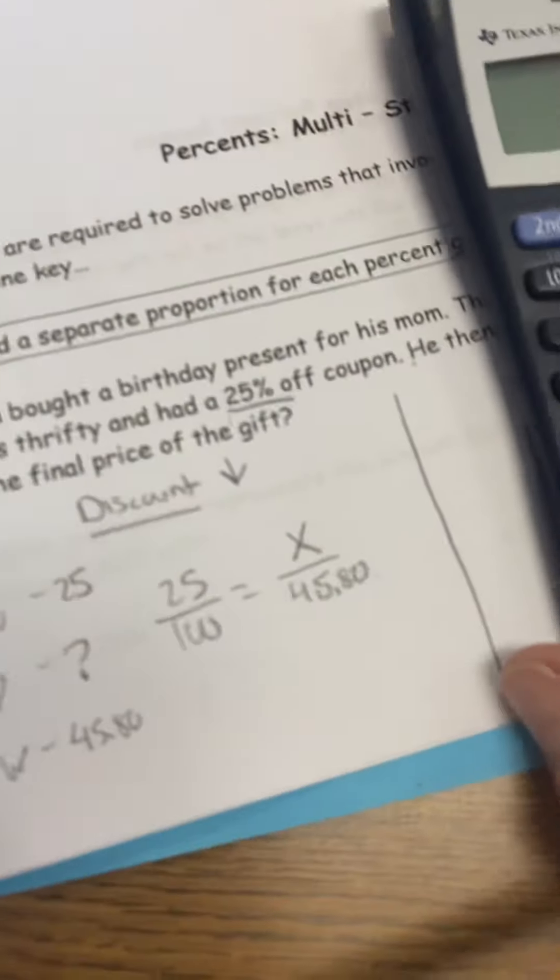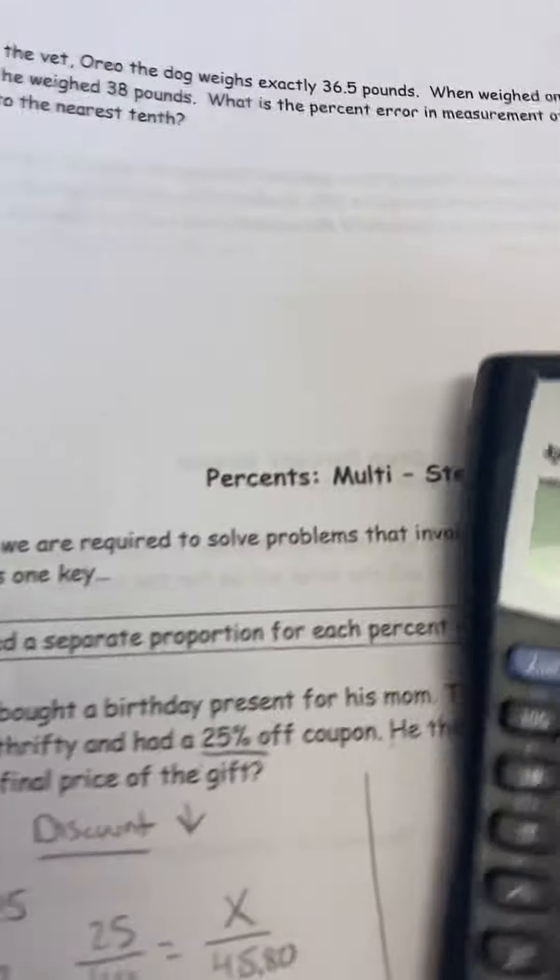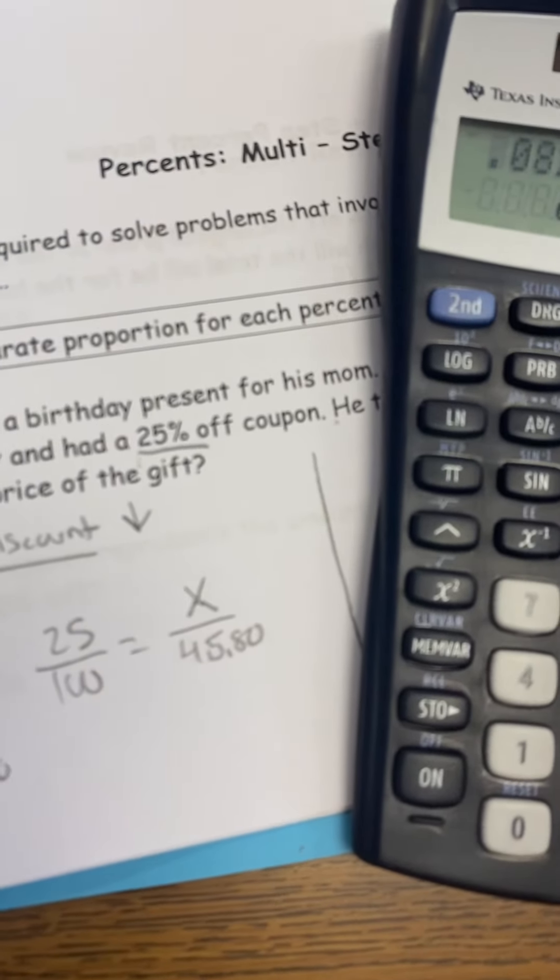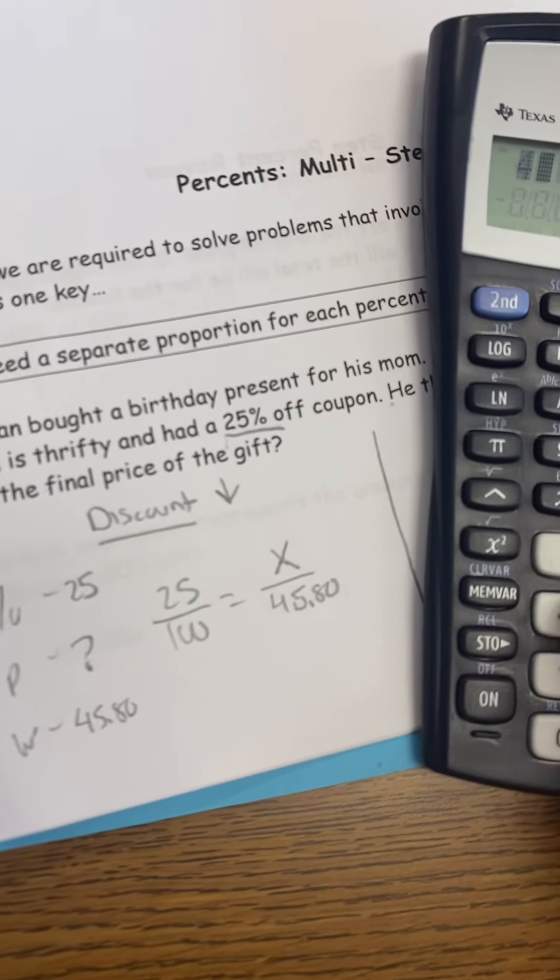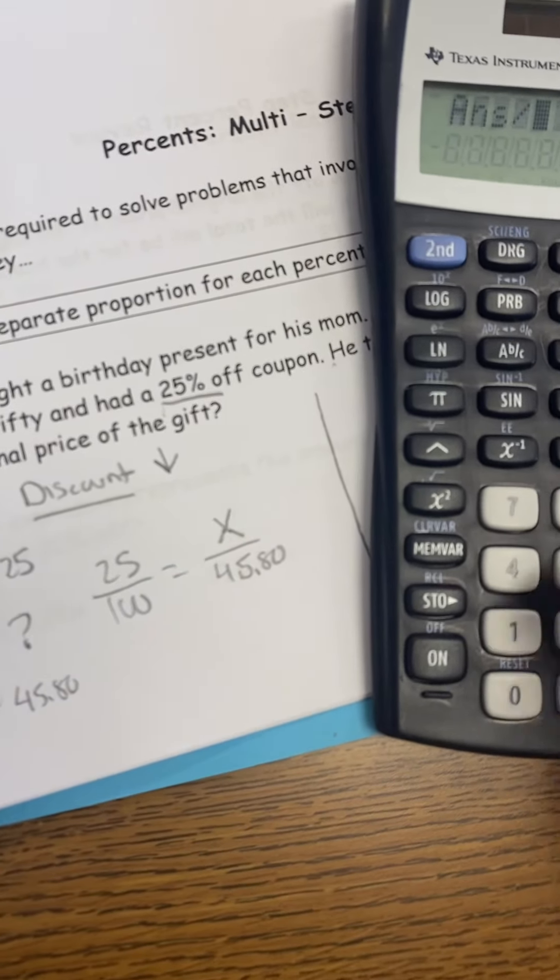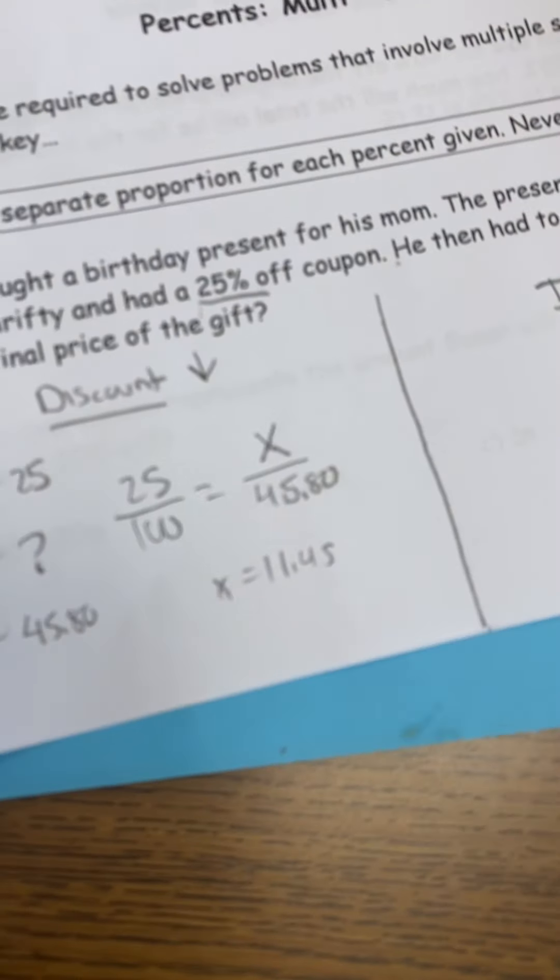So we're going to do, ready? 25 times 45.8 divided by 100. 45.8 times 25 divided by 100. Did you get 11.45? Me too. So $11.45 is the discount.